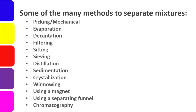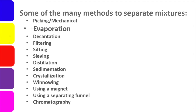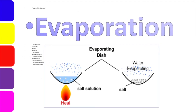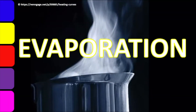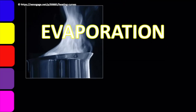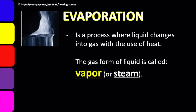Those are some of the many methods to separate mixtures. There are many more, but they require more sophisticated tools. Today, we will be focusing on evaporation — using heat energy to separate a solid-to-liquid mixture. Evaporation is a process where liquid changes into gas with the use of heat. When liquid is boiled and starts steaming, the evaporation is focused on that process where the liquid part turns to steam.